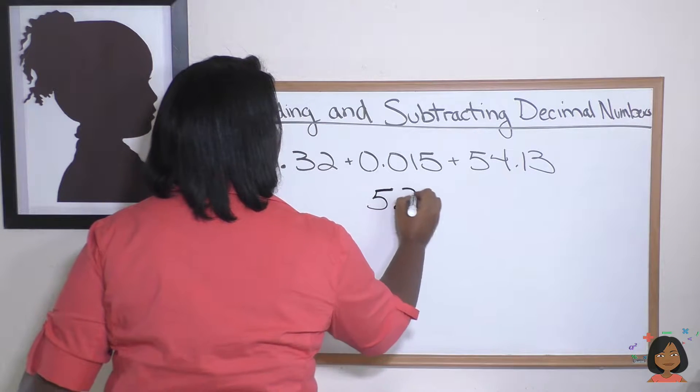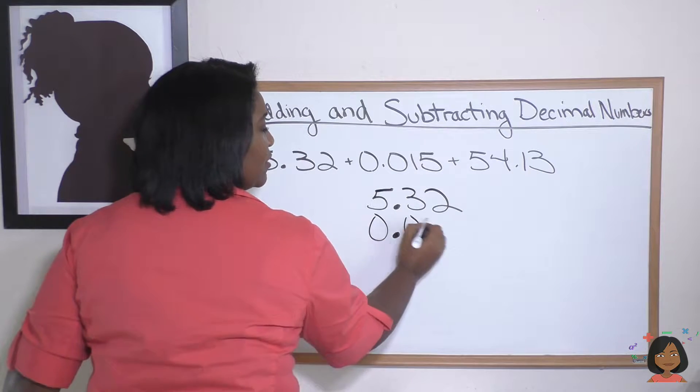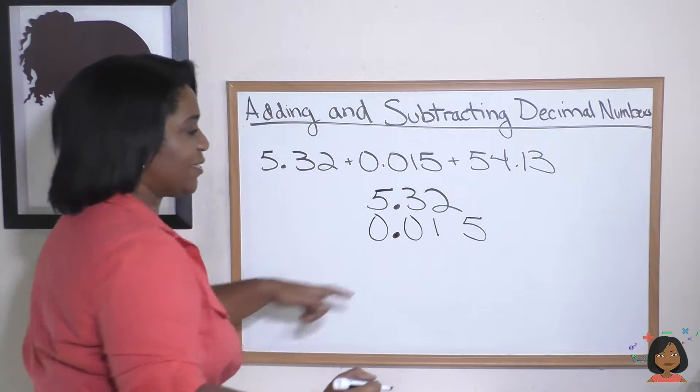Here we go. 5.32. Now my zero—I line up the decimal—0.15. You might say, 'Well Nicole, I've got nothing out there to add with.' Hang tight, I'm going to show you.